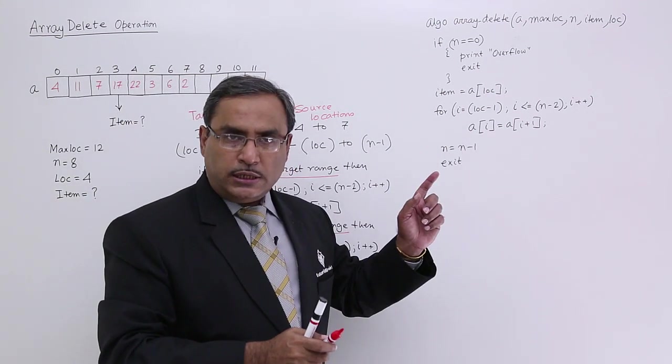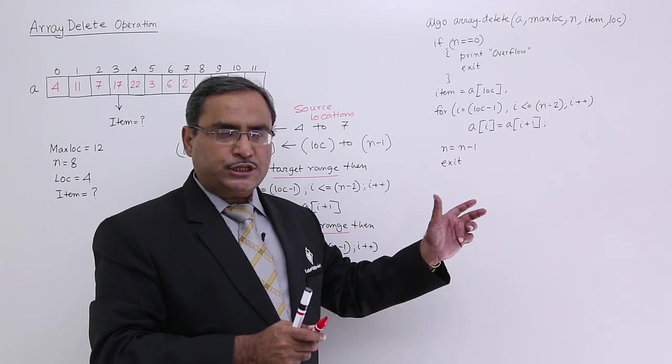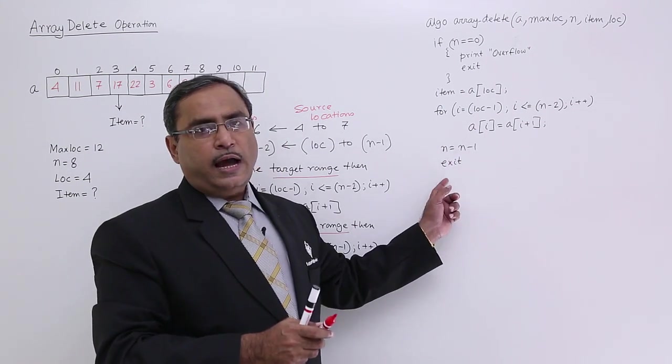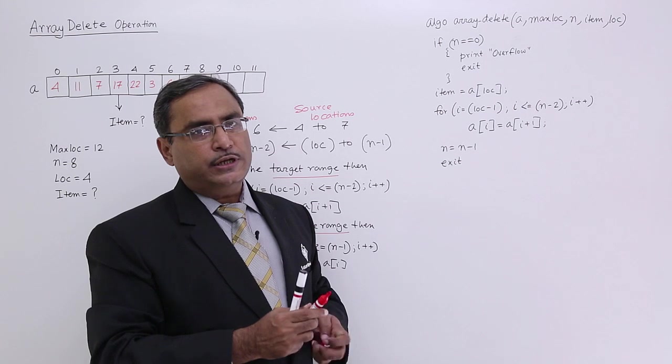So now after deletion, after shifting, after compaction, the value of n should be decreased by 1 and exit will indicate successful termination of the algorithm.